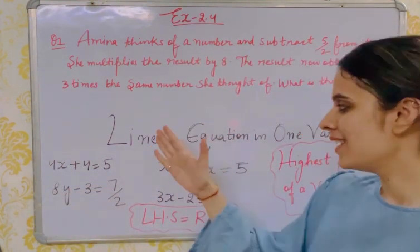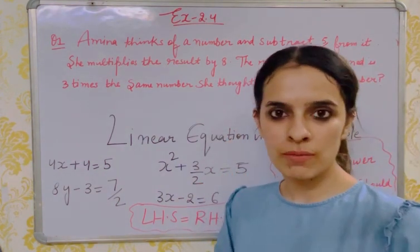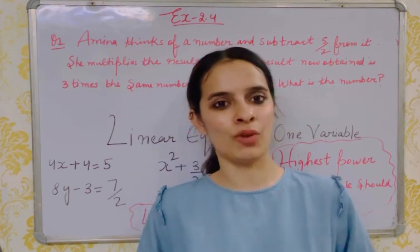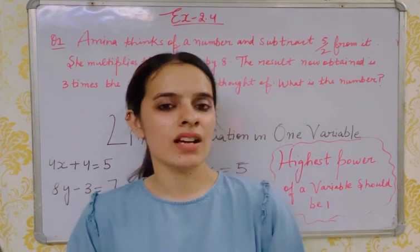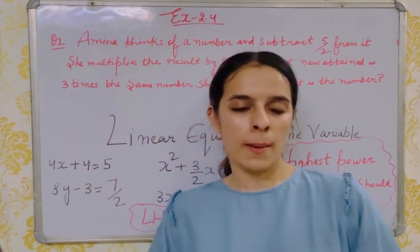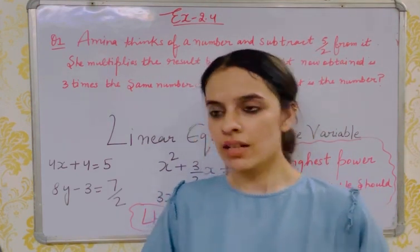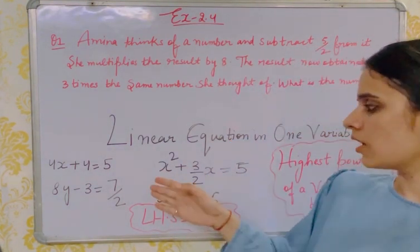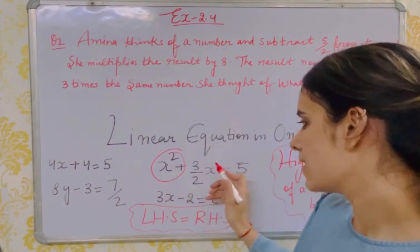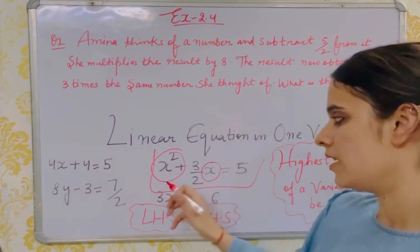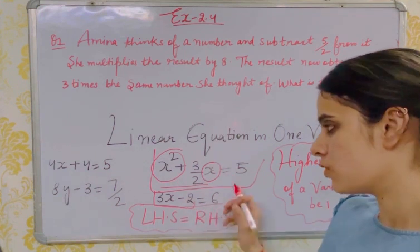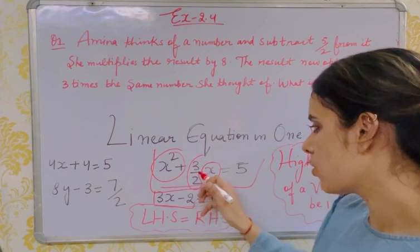Now, in the big statement 'Linear Equation in One Variable,' what does 'variable' mean? A variable is an unknown value. You might have seen many alphabets used in maths — x, y, z — and wondered why. All of these unknown values are called variables. In an algebraic expression, the alphabets like x are called variables, and the numerical values are called constants.